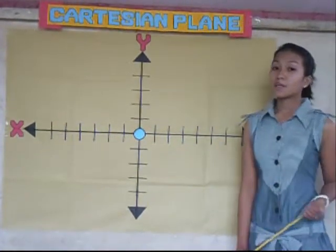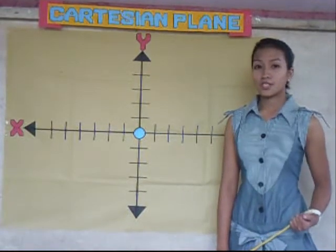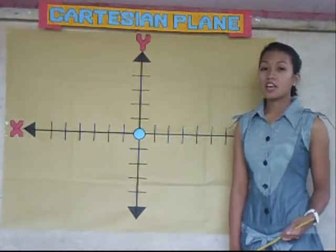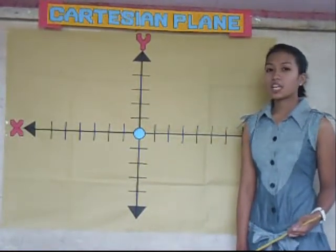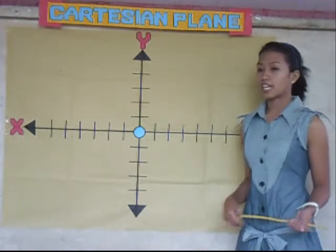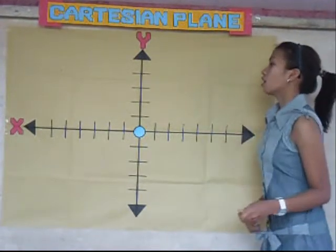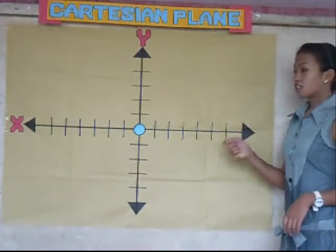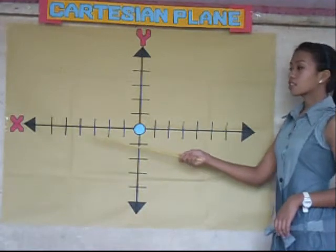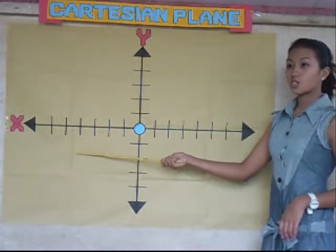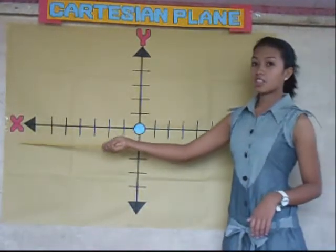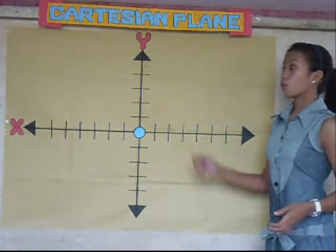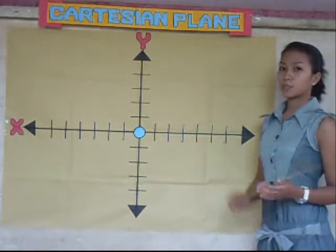To start my lesson, let me first define what a partition plane is. A partition plane is composed of two lines: the vertical line and the horizontal line. The horizontal line is your x-axis and the vertical line is your y-axis.